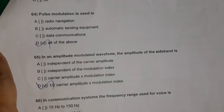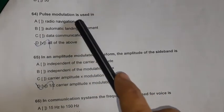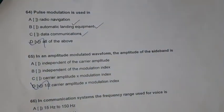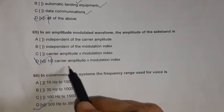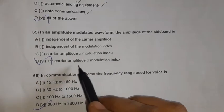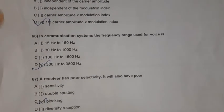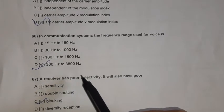Question 64: Pulse modulation is used in radio navigation, automatic landing equipment, and data communications. Question 65: In an amplitude modulated waveform, the amplitude of the sideband is half the carrier amplitude when the modulation index is 1. Question 66: In communication systems, the frequency range used for voice is 300 Hz to 3800 Hz.